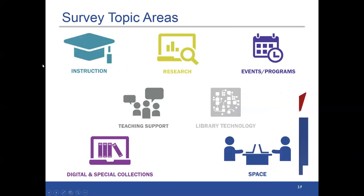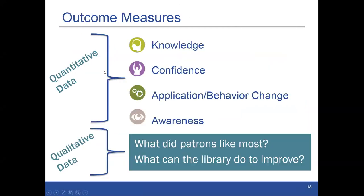The survey topic areas that the task force developed — there are seven, based on PLA's model. We really had to identify what mattered: what key survey areas would cover a broad range of programs and services that academic libraries provide. The initial drafts were field tested by 54 institutions of all types nationwide between June and October of last year, and feedback from that process was instrumental in improving the final survey topics and question text. Each of the seven surveys measures four main outcomes: knowledge, confidence, application, and awareness — captured in quantitative data. Each survey also has two qualitative questions asking what patrons liked most and what the library can do to improve.